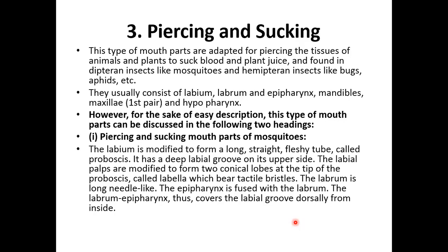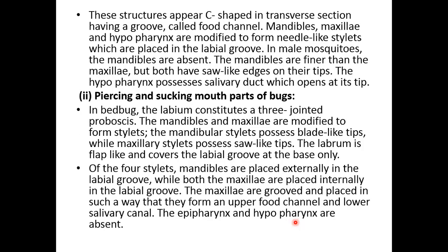The labrum is long and needle-like. The epipharynx is fused with the labrum, and the labrum-epipharynx covers the labial groove dorsally from inside. These structures appear C-shaped in cross-section, having a groove called the food channel. The mandibles and hypopharynx are modified to form needle-like stylets, which are placed in the labial groove. In male mosquitoes, the mandibles are absent. The mandibles are finer than the maxillae, but both have serrated edges at their tip. The hypopharynx possesses a salivary duct.